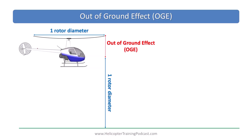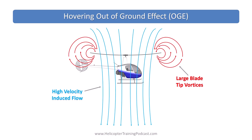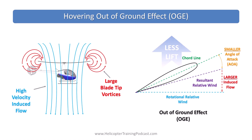Out of ground effect is when the rotor system is at least one rotor diameter away from the ground. Here, the induced flow has no real resistance from the ground, which can lead to increased induced flow rates and larger vortices that recirculate around the edge of the disc, reducing the effective lifting area of the rotor disc. Both of these things contribute to a reduction in rotor disc lifting ability through changes in angle of attack and effective lifting area.